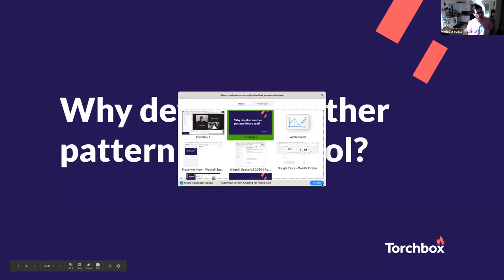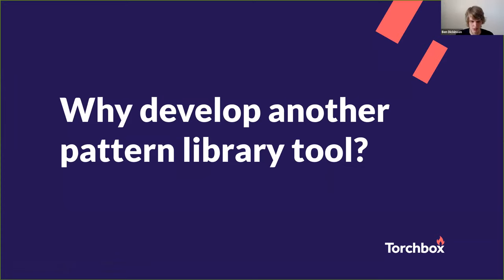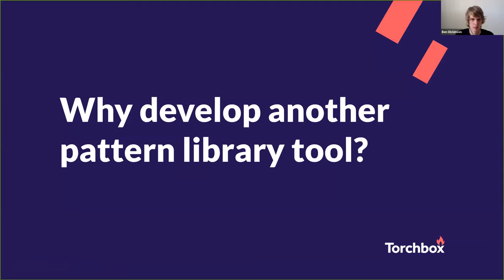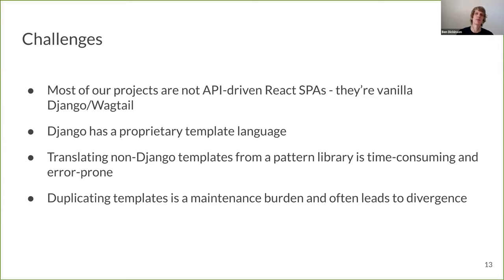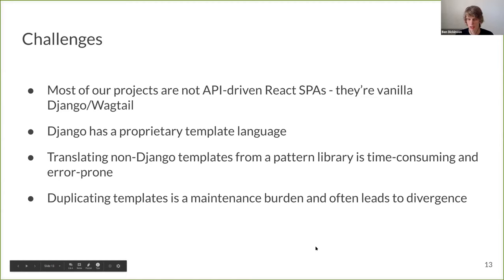Thanks, Tibo. As Tibo mentioned, this approach has worked well for us at Torchbox. There were existing tools like PatternLab and Storybook for React, but there was no library here for Django, so we decided to develop our own. Most of our projects are just vanilla server-rendered Django Wagtail projects with Django templates, so we need an approach that allows us to take this componentized approach and apply it to that. Django's templating language is proprietary and we couldn't find any tools that did this off the shelf, so we had to build our own.